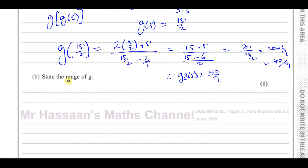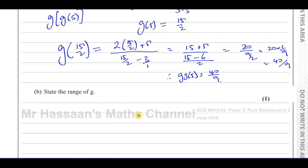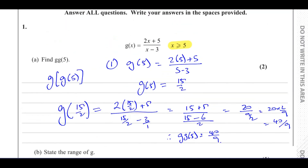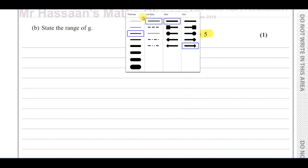Part B says: state the range of G. 'State' means it doesn't require too much calculation. The range refers to all the Y values the function takes — all the values where it exists on the Y axis.